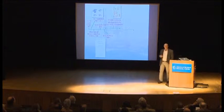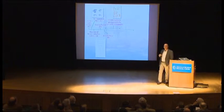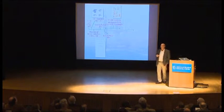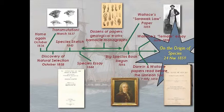Then comes Darwin's so-called delay — this period pursuing lines of evidence on many fronts: a diversion with barnacles across four monographs, three volumes on the geology of the Beagle voyage, a number of experiments, some 60 papers, and so on. He was pretty active. Finally, Charles Lyell takes notice of Wallace's so-called Sarawak law paper of 1855, and — unlike Darwin — clearly senses that Wallace is very close to an understanding of species change, and urges his friend to consider publishing. Darwin finally begins writing up his theory in 1856, underestimating Wallace's creativity.